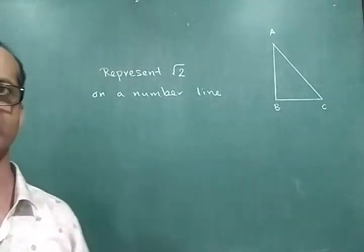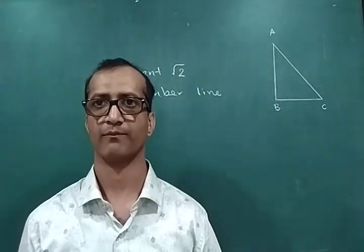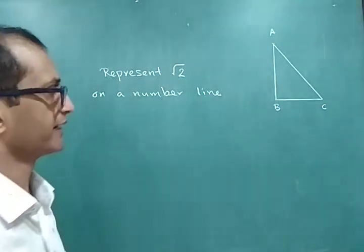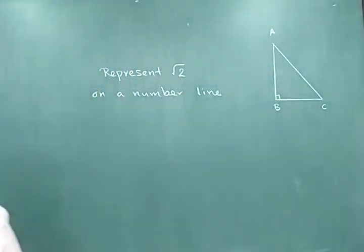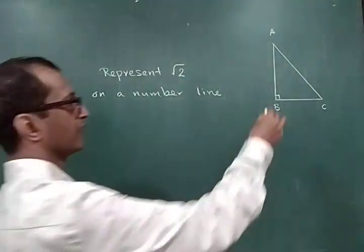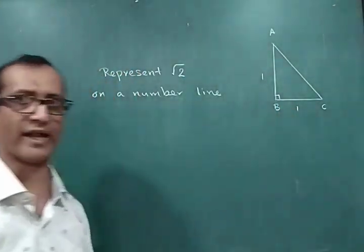Now before I start with that, let's have a quick revision about Pythagoras theorem. Now in a right angle triangle ABC, if I have the values of AB and BC as 1,